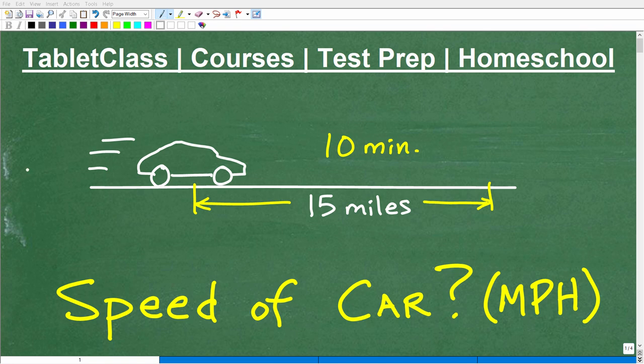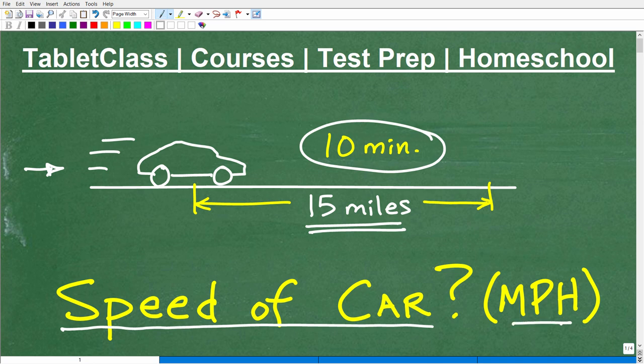Okay, so what do we got going on here? Well, we got this nice car speeding down the highway and it looks like it's going to cover 15 miles or travel 15 miles in 10 minutes. And what we want to compute here is we want to figure out what is the speed of the car, specifically in miles per hour. Now, I would say pause the video, see what you come up with.